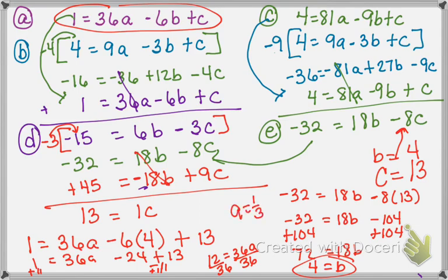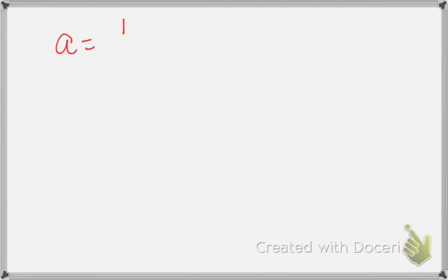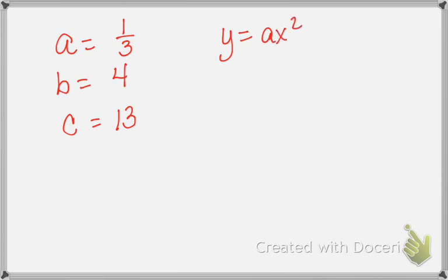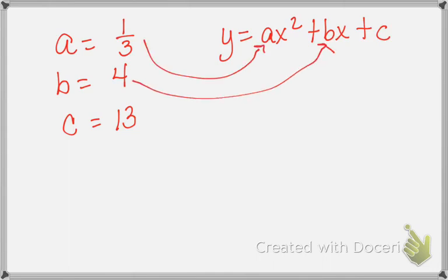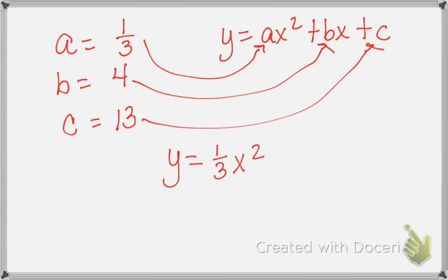So now I know my a is 1/3, my b is 4, and my c is 13. I'm going to move these to the next page and make my equation. I know a is 1/3, b is 4, and c is 13. The formula is y equals ax squared plus bx plus c. Plugging in all the values: y equals 1/3 x squared plus 4x plus 13. There it is in standard form.